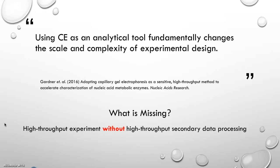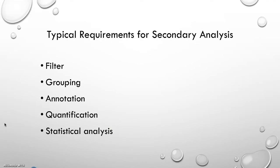In recent publications, it claimed using CE as an analytical tool fundamentally changes the scale and complexity of experimental design. However, we are missing high-throughput secondary data processing for high-throughput experiments. The bottleneck is data analysis. Typical requirements for secondary analysis include filter, grouping, annotation, quantification and statistical analysis.